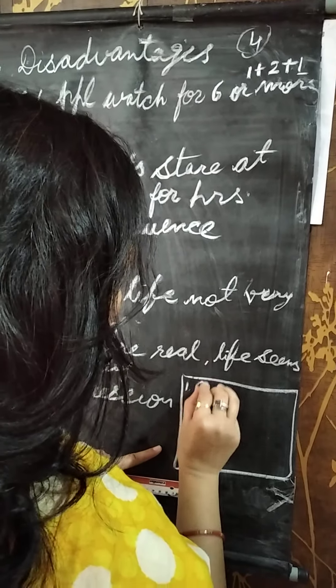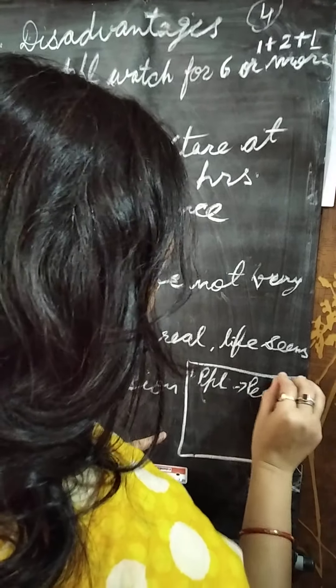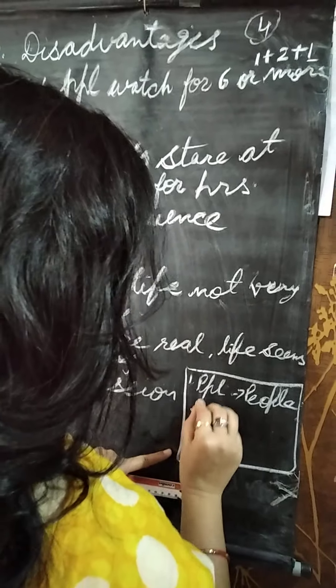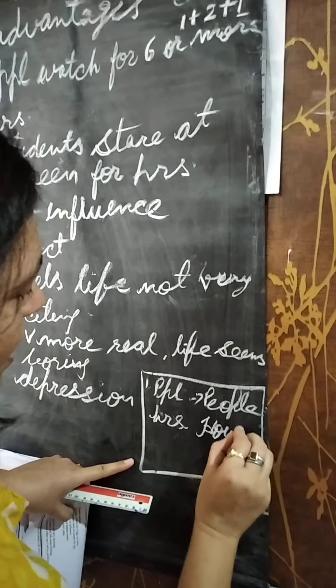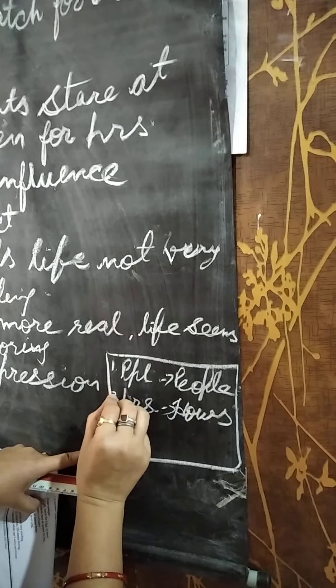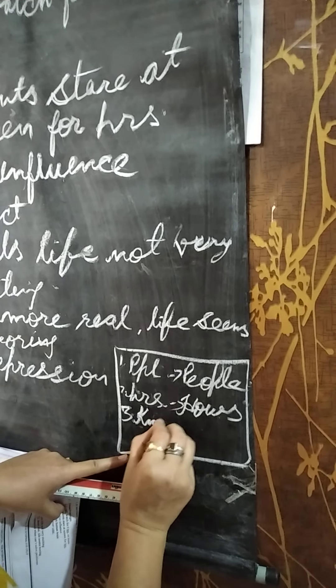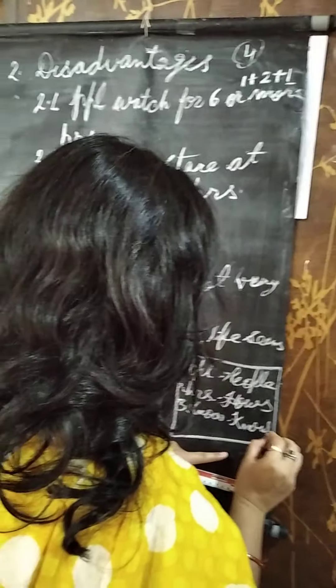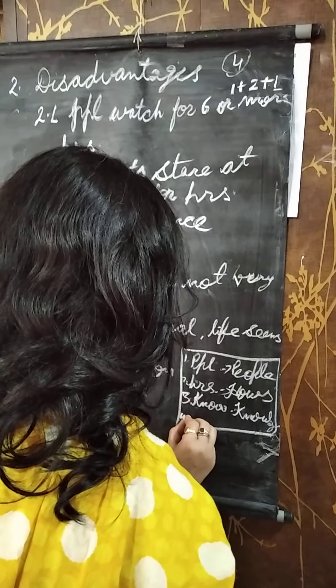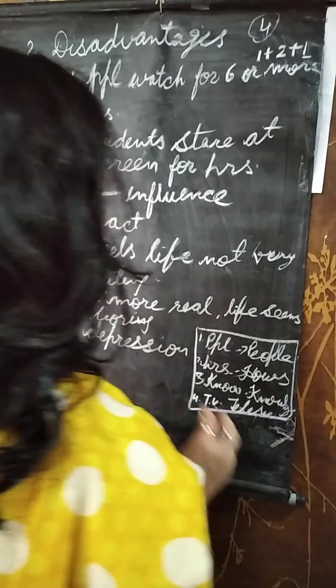1 we have used here PPL. Then you have to write the full spelling here. PPL, people. H-R-S, H-O-U-R-S, hours. Then we used K-N-O-W, means knowledge. Then we used TV, television.